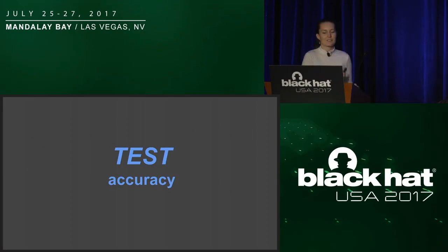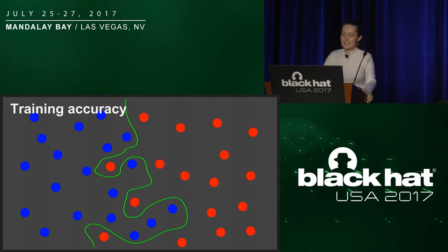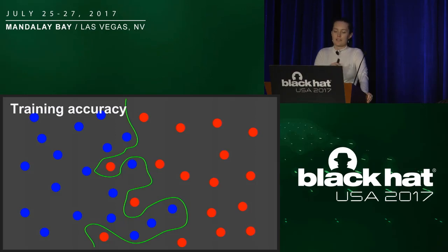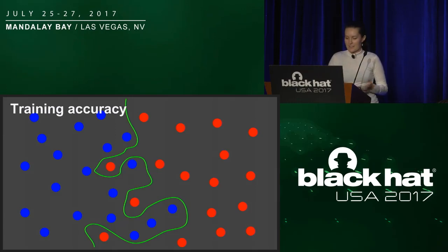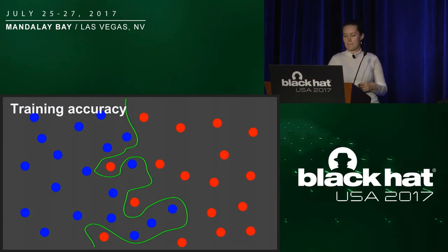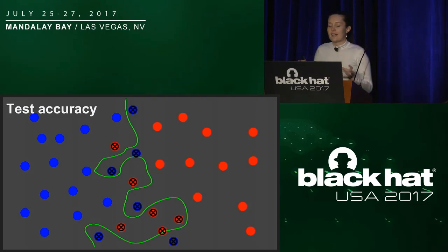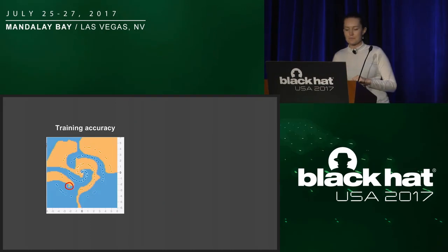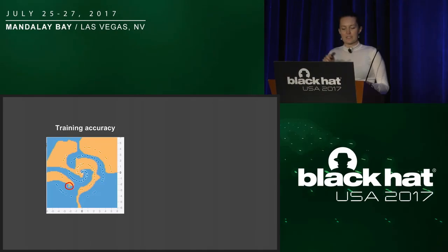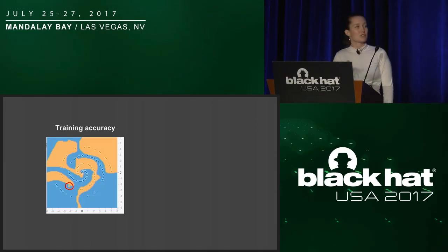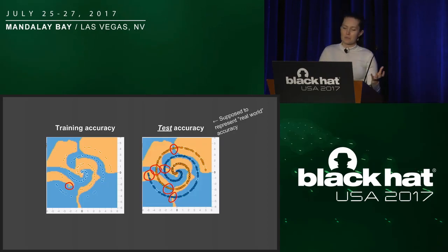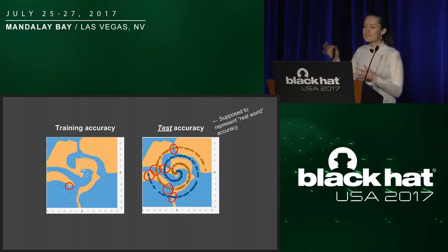Next up in this process is test accuracy. Imagine a machine learning model trying to predict if a dot should be classified as blue or red based on where it is. Looking at training accuracy, the model thinks it's doing really awesome — it's classified every single point correctly. But we want to know how the model is actually going to do on new data. What happens when we give it new data it's never seen before? Bad stuff — lots of misclassifications. Test accuracy is supposed to represent how a model is going to do on new data in the real world. A small neural net figuring out a spiral-shaped pattern thinks it's doing well during training, but during testing we realize it's not doing so well.